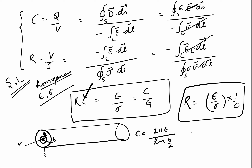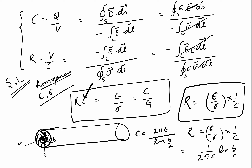The insulation resistance between the center conductor and the sheath — through the insulating material in between — can be found as R = (epsilon/sigma) × (1/C), which gives R = (1 / 2π·sigma) × ln(b/a). In this way we can easily find resistance from the capacitance.